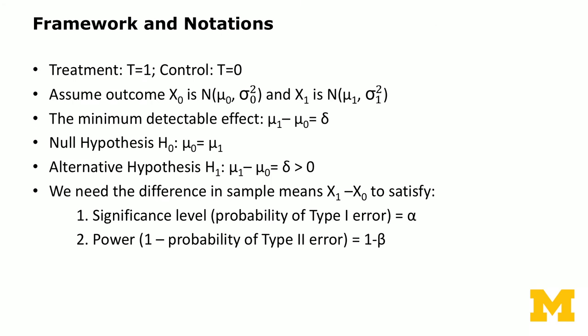We're going to derive principles for sample size allocation. The treatment is denoted by t=1 and control by t=0. The outcome variable X0 — the test score of students in the control condition — follows a normal distribution with mean μ₀ and variance σ₀². X1, the test scores of the treatment condition (smaller class size), follows a normal distribution with mean μ₁ and variance σ₁². Subscript 0 denotes control; subscript 1 denotes treatment.